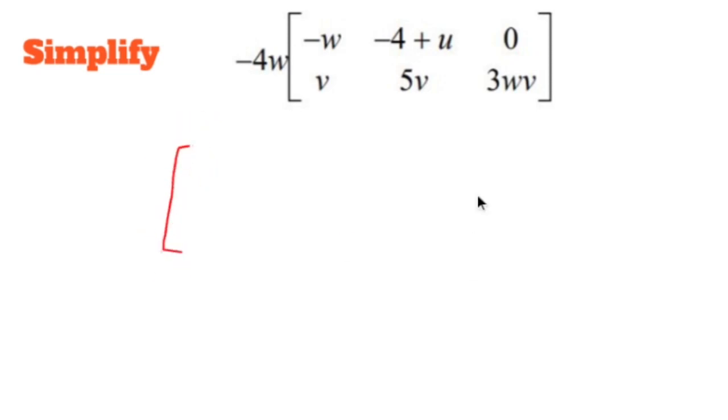And essentially, what you do with scalar multiplication is you distribute that negative 4w to all six of these elements. So negative 4w times negative w is positive 4w squared.